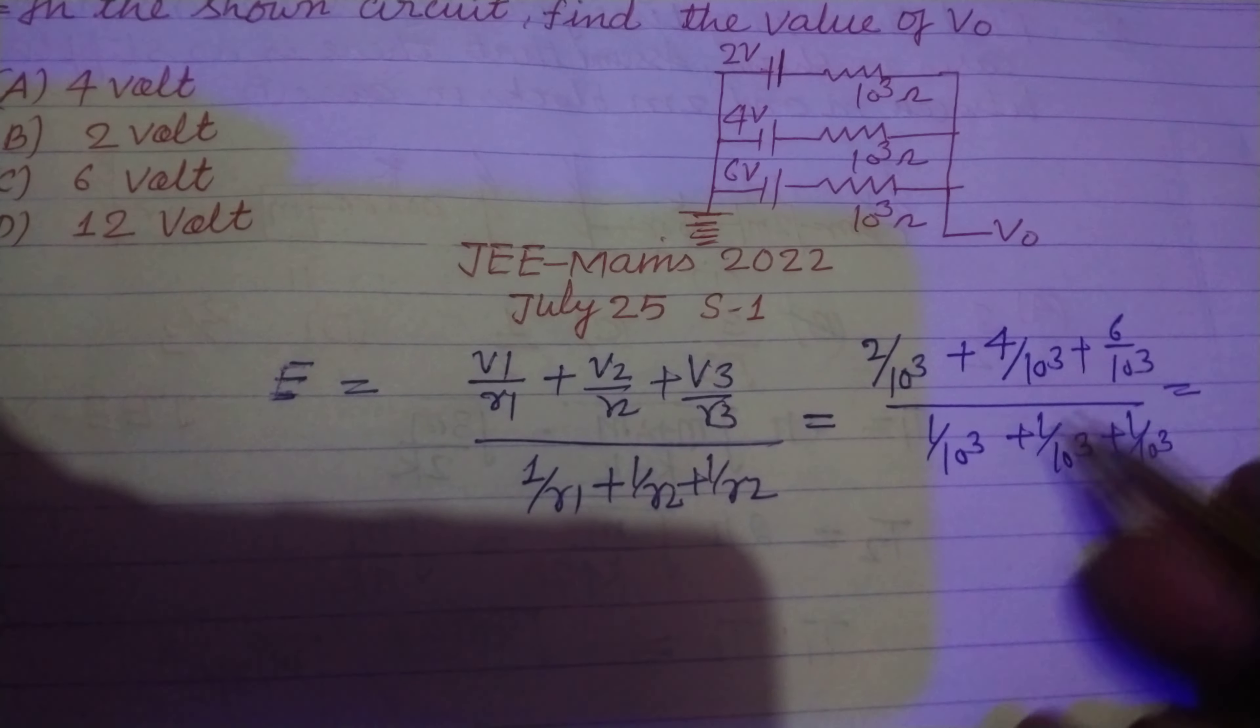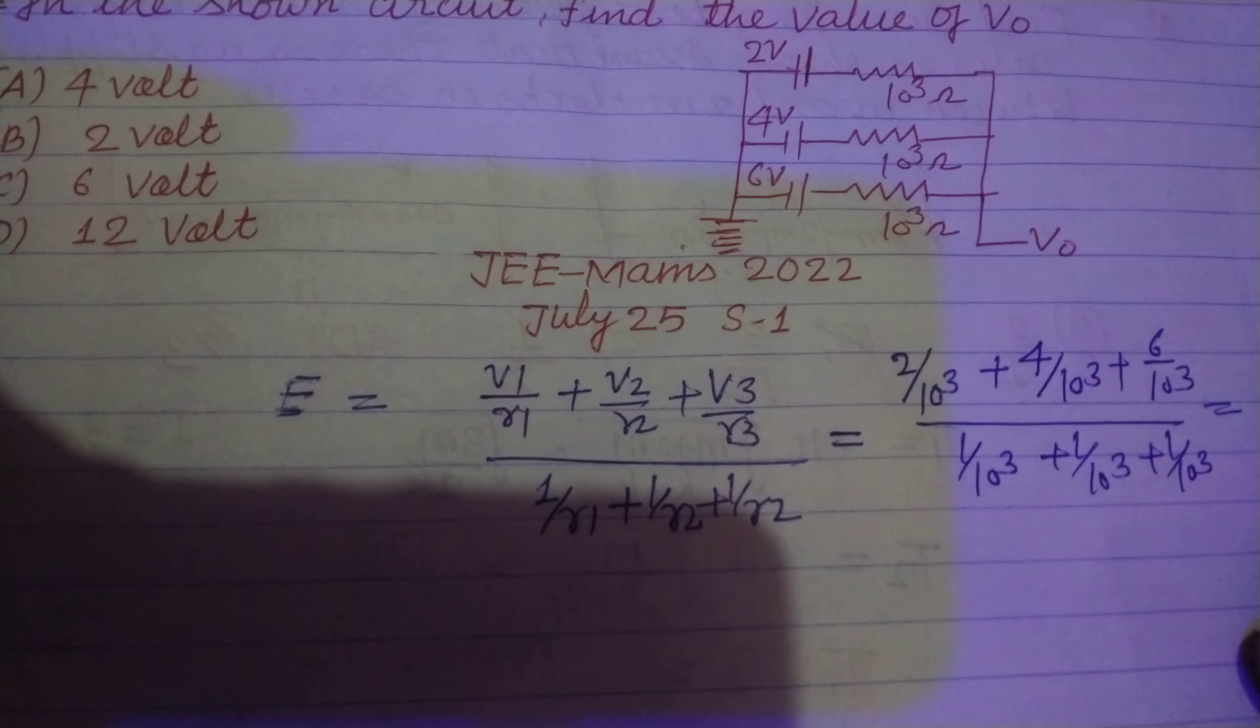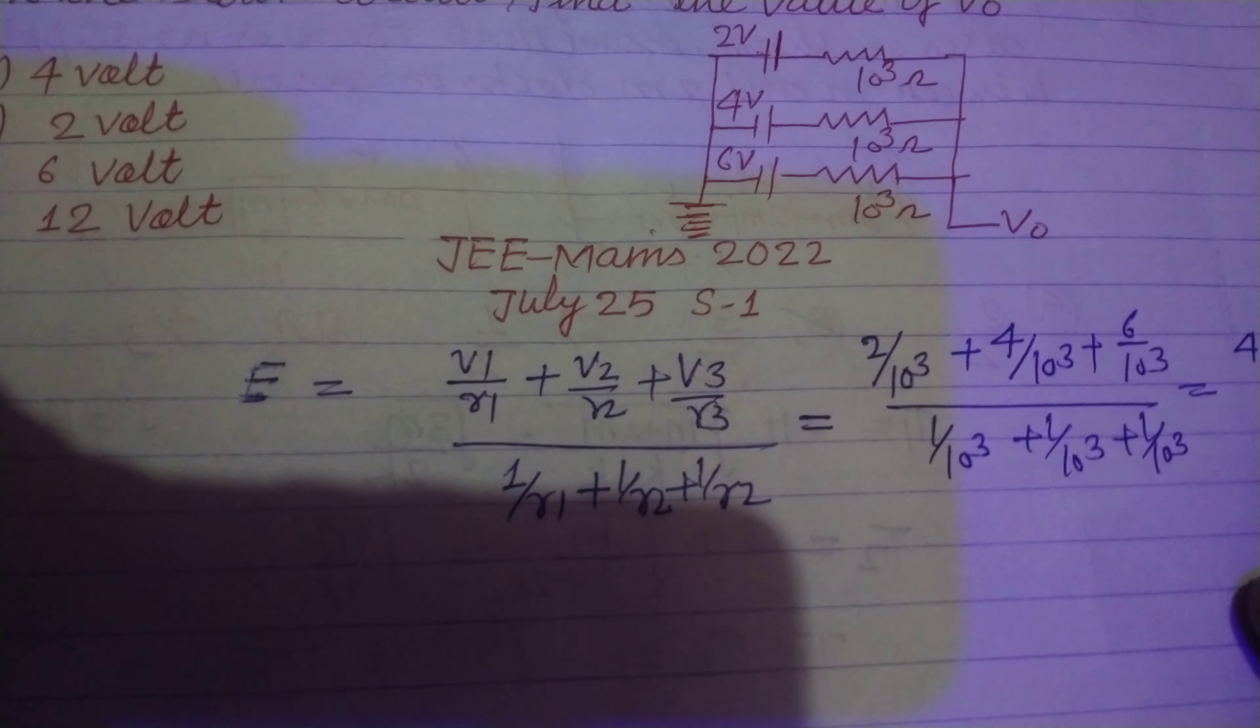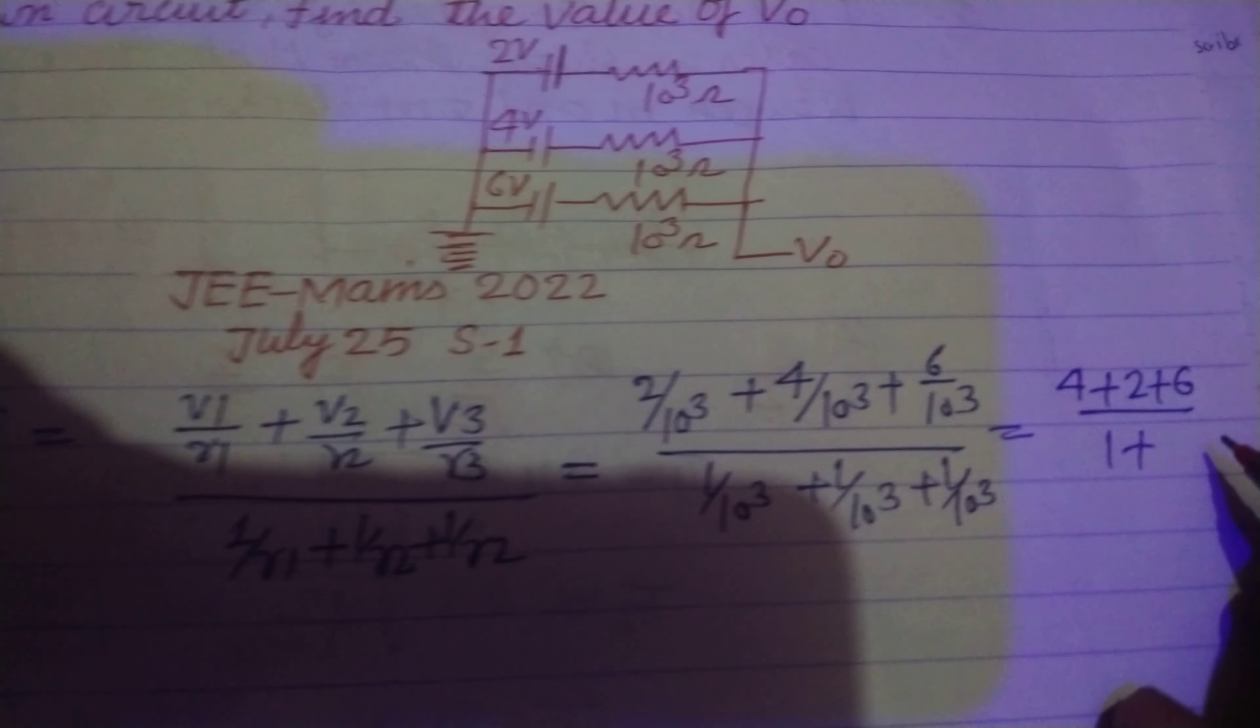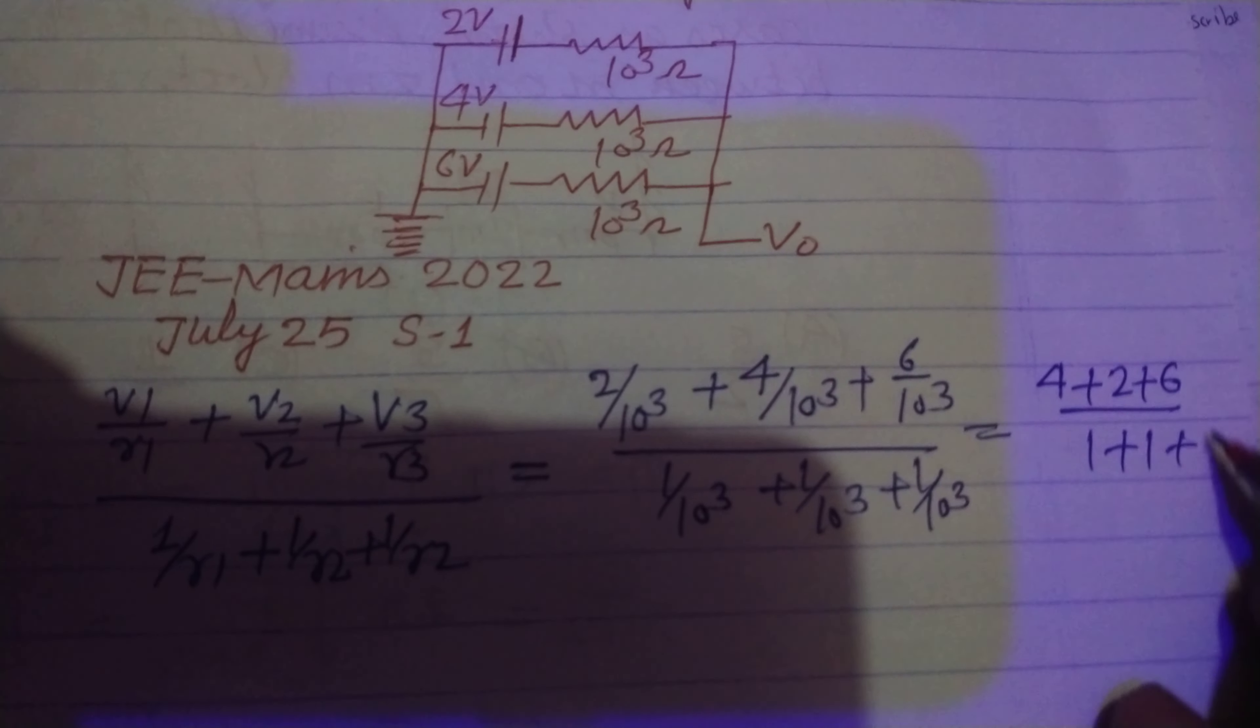1 upon 10 to the power 3 is cancelled from both sides. So, 4 plus 2 plus 6 over 1 plus 1 plus 1.